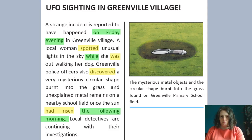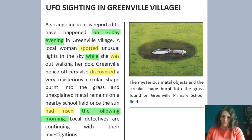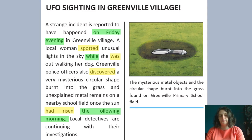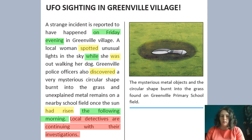In green I've got my words and phrases to show time: 'on Friday evening', 'while', 'the following morning' — all of those things are talking about when things happened. The next colour should be blue, but you might have noticed there are no quotes in this part of the newspaper report, so I don't have anything to highlight in blue. That comes later on, so maybe you'll be able to find some quotes from important people in the bit you're going to read. My last bit is in red — that is what's happening now. 'Local detectives are continuing with their investigations' — that's what's happening now. The UFO was spotted yesterday; now the police are investigating. So I've put that in red.